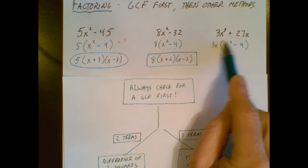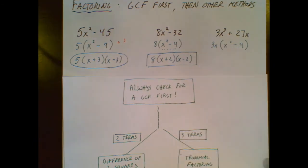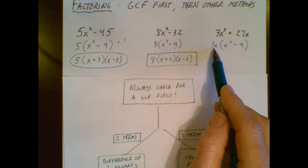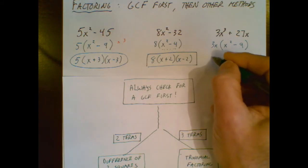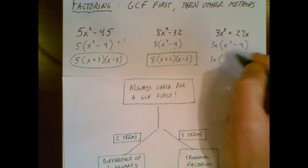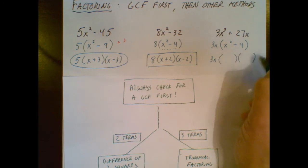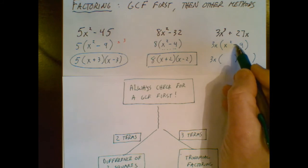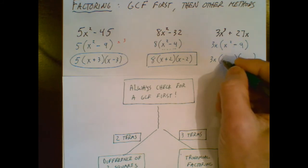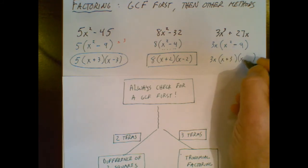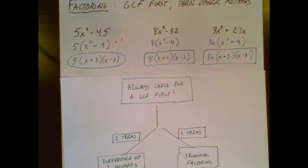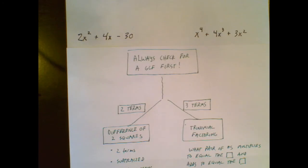I can always distribute back to make sure life is good. This GCF is just going to come along for the ride. So when I go to the next step, I just recopy it. And this piece follows the difference of two squares. Two terms subtracted, and I can square root both of them. And I have my final answer.